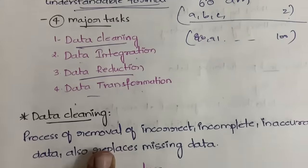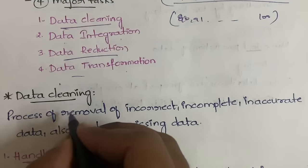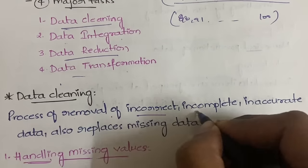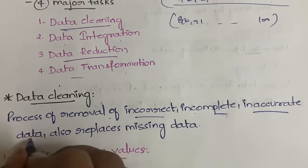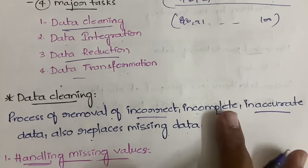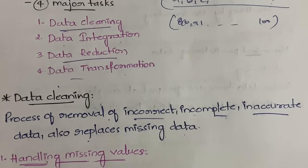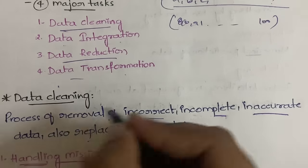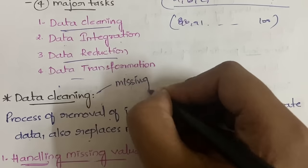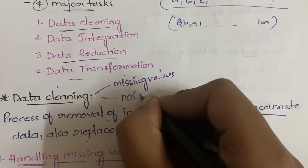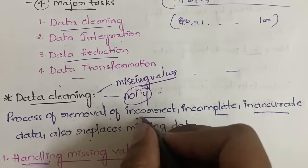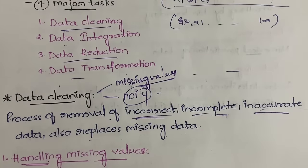The first step is data cleaning. It is the process of removal of incorrect, incomplete, inaccurate, or inconsistent data. It also replaces missing values — filling any empty spaces in the data. In data cleaning we have two things: handling missing values and handling noisy data. Noisy data refers to incorrect, incomplete, inaccurate, or erroneous data.